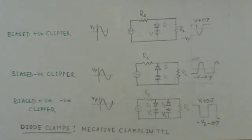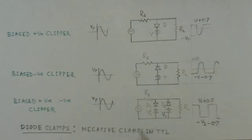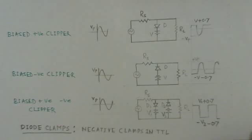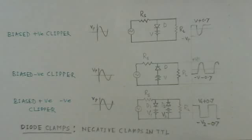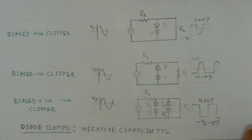Next is the topic of diode clamps, which are different from clamper circuits — they are more like limiter circuits. Diode clamps are used in many applications. One important use is a negative clamp in TTL circuits to prevent excessive voltage from being applied to the TTL input. Similarly, clamps are used at operational amplifier inputs, since the differential input voltage of an op-amp must be kept very small. To avoid over-voltage at the op-amp input, diode clamps are used.